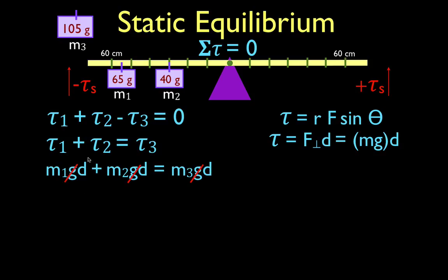Now you'll notice all of these equations, all of these terms, have g in it. Now you could leave it in and write down 9.8 three times, or you'll notice we can just cancel them out, and we can solve for the distance number 3, the location for mass number 3, and that is going to be equal to the mass times the distance for mass number 1, plus the values for number 2, and then we would simply divide by the mass of number 3.